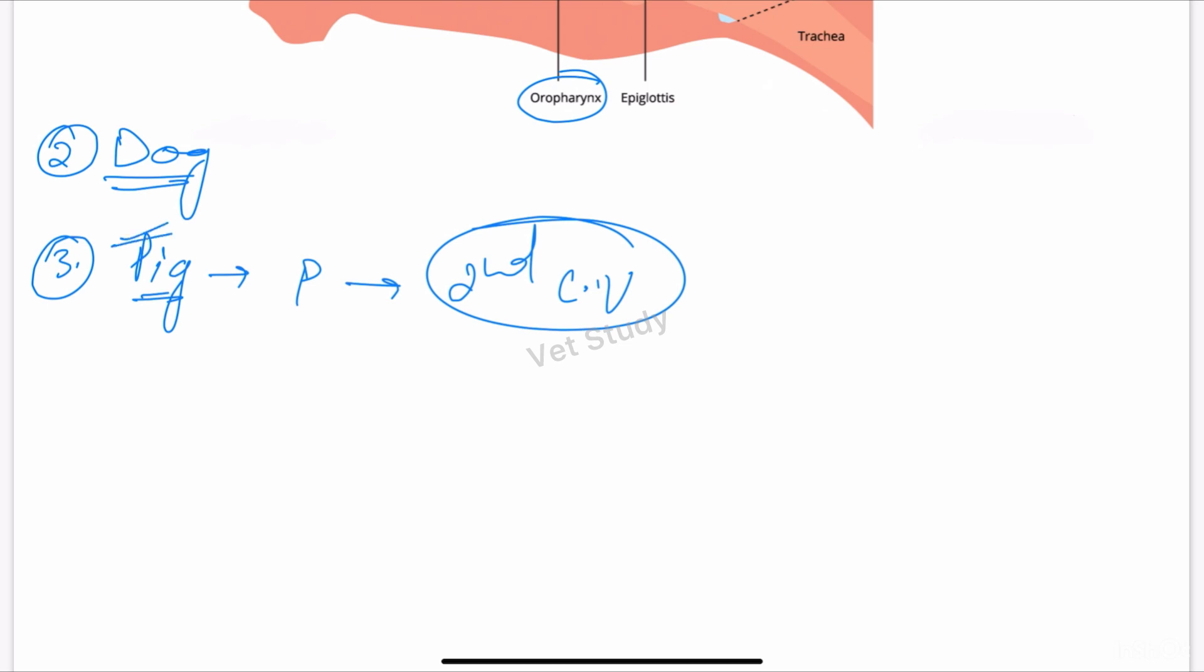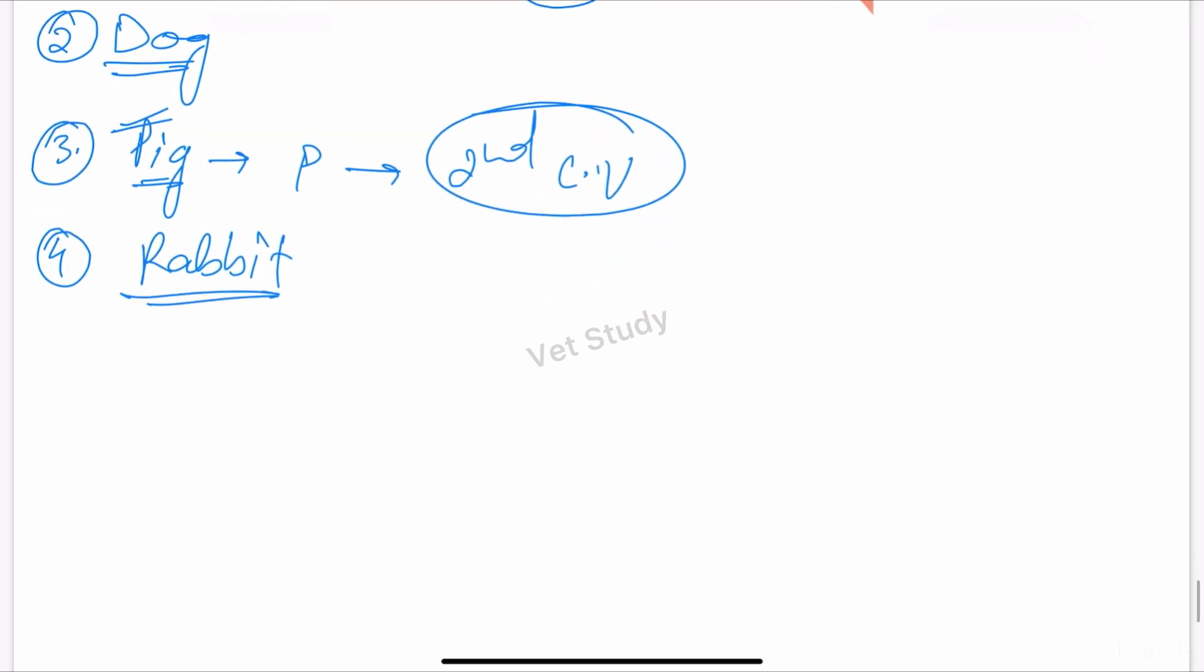Now let's talk about the rabbit. In rabbits, the esophagus is narrow and elongated, and the oropharynx is extensive.